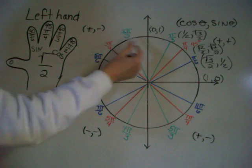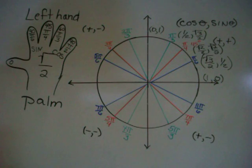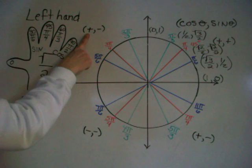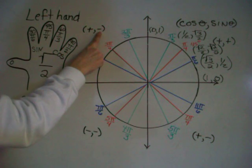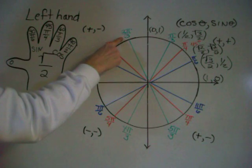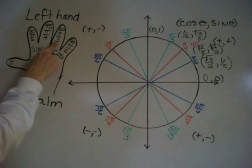When you do the other quadrants, you're going to use the same trick, only remembering that in the second quadrant, cosine is positive, sine is negative. So if you see it, one that divides by 3, it's going to be the same as a 60, because it's divided by 3.